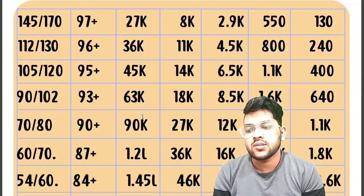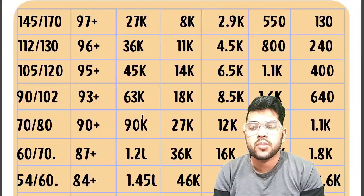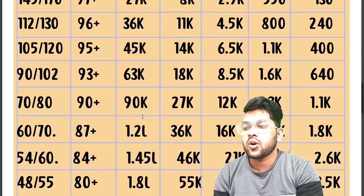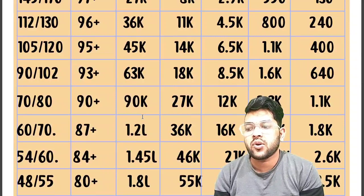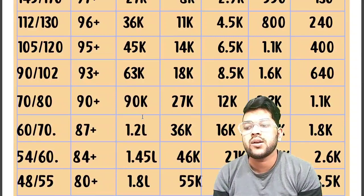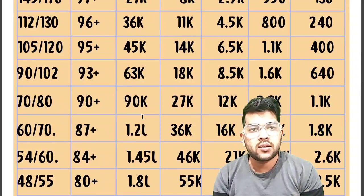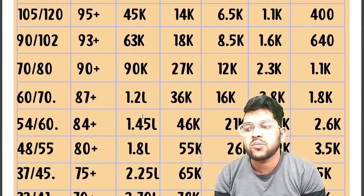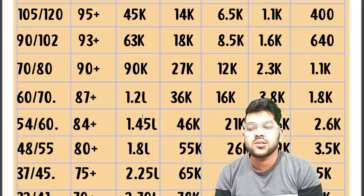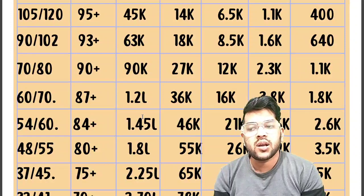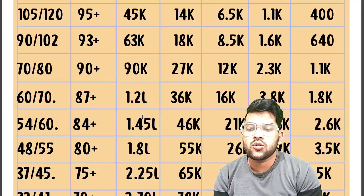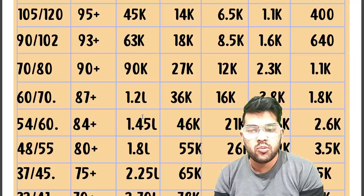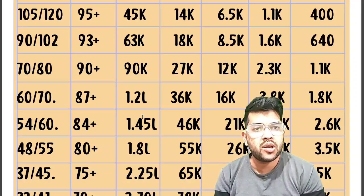For 84+ percentile, 54 and 60 marks are required for first and second attempt, and the General rank will be around 1.45 lakh. For 80+ percentile, 48 and 55 marks are required and the General rank will be around 1.8 lakh. For 75+ percentile, 37 and 45 marks are required and the General rank will be around 2.25 lakh.